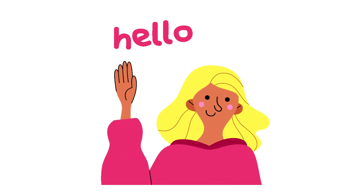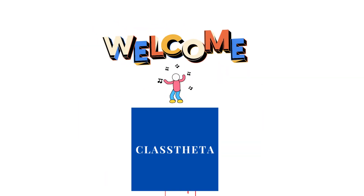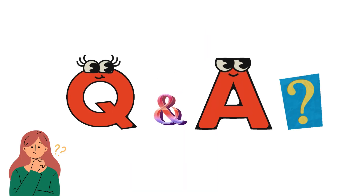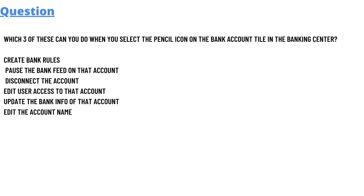Hi everyone, my name is Mr. Smart and I'm your teacher. I'll be teaching you different question and answer in this question and answer series by class Theta. For today's question, which we'll be discussing, is: which three of these can you do when you select the pencil icon on a bank account title in the banking center?